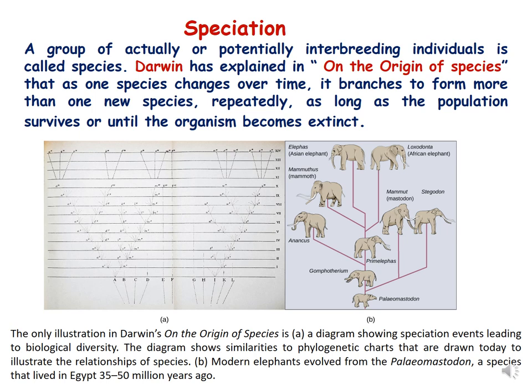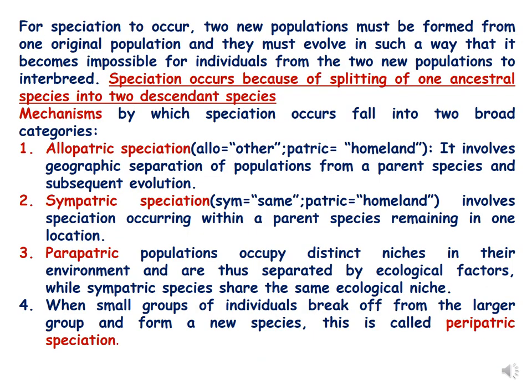Here in this picture you can see Darwin's illustration of how one species of elephant is giving rise to another, and from the second one more than one species has formed. For speciation to occur, the two new populations must be formed from one original population and they must evolve in such a way that it becomes impossible for individuals from the two new populations to interbreed.